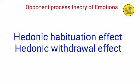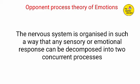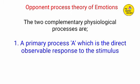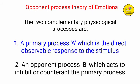The two effects are the hedonic habituation and hedonic withdrawal effect. The nervous system is organized in such a way that any sensory or emotional response can be decomposed into two concurrent processes: first, a primary process A, which is the direct observable response to stimulus; and second, an opponent process B, which acts to inhibit or counteract the primary process.